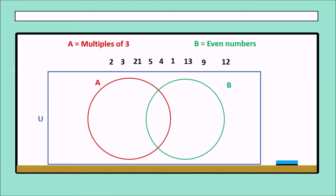First, 1: is it a multiple of 3, even, or neither? It is out, because it is not a multiple of 3 nor an even number. Next, 2 is absolutely an even number. Then 3 is a multiple of 3. Next, 4 is an even number. And 5 — is it a multiple of 3 or even? It is out.